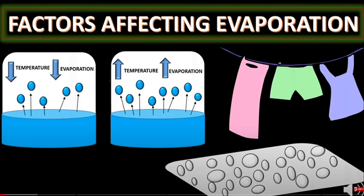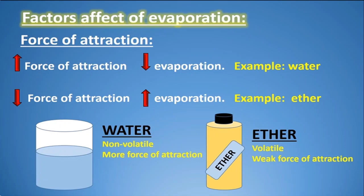The next heading is: factors affecting evaporation. The first factor is intermolecular forces of attraction. If the forces of attraction between molecules are stronger, then the rate of evaporation will be less. For example, in water molecules there is strong hydrogen bonding. If you keep a glass of water at room temperature, the rate of evaporation is relatively low.